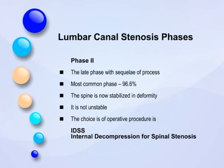Phase 2 is the delayed phase with sequelae of the process. This is the most commonly encountered phase. The spine is not unstable anymore and is stabilized in deformity. The choice of operative procedure for this phase is internal decompression of spinal stenosis.